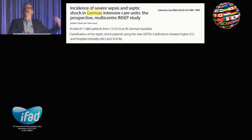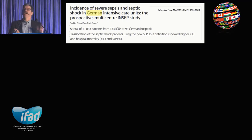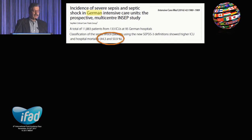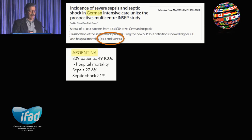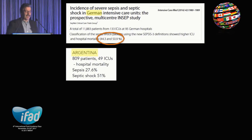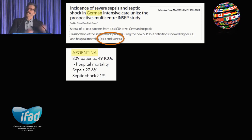How's it working? Studies are coming out — people are looking retrospectively at their databases and prospectively, which is exactly what we wanted. From Germany, 12,000-odd patients: when you apply a more rigorous criteria for defining septic shock, the numbers go down and these are sicker patients with higher mortality — ICU mortality of 44%, hospital mortality of 51%. From Argentina, a prospective study by Elisa Estensoro across 49 ICUs with 800-odd patients: mortality for sepsis 27%, septic shock 51%. Very similar.